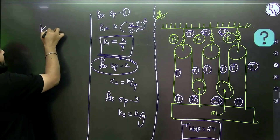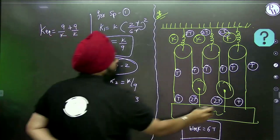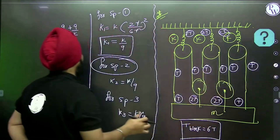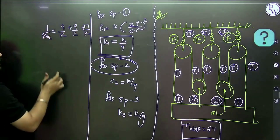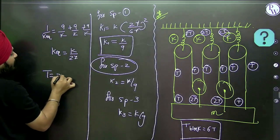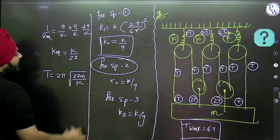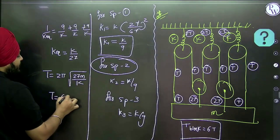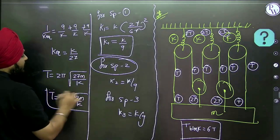Consider all three springs in series. The reciprocal: 1/K_equivalent equals 9/K plus 9/K plus 9/K equals 27/K. So K equivalent equals K by 27. The time period T equals 2π under root of 27M by K. Simplifying: 27 equals 9 times 3, so T equals 2π × 3 under root of 3M by K, which gives T equals 6π under root of 3M by K. This is the time period of the SHM of the block — a very critical case solved using the shortcut.